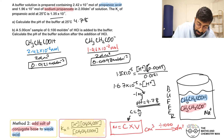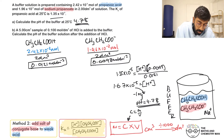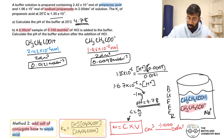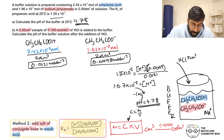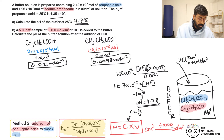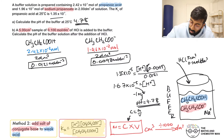Now, 5 cm³ of hydrochloric acid at 0.1 mol dm⁻³ is added to the buffer. We need to find how many moles of HCl are added. Using moles = concentration × volume, and converting 5 cm³ to dm³ (5 ÷ 1000 = 0.005 dm³): moles of HCl = 0.1 × 0.005 = 5×10⁻⁴ moles.